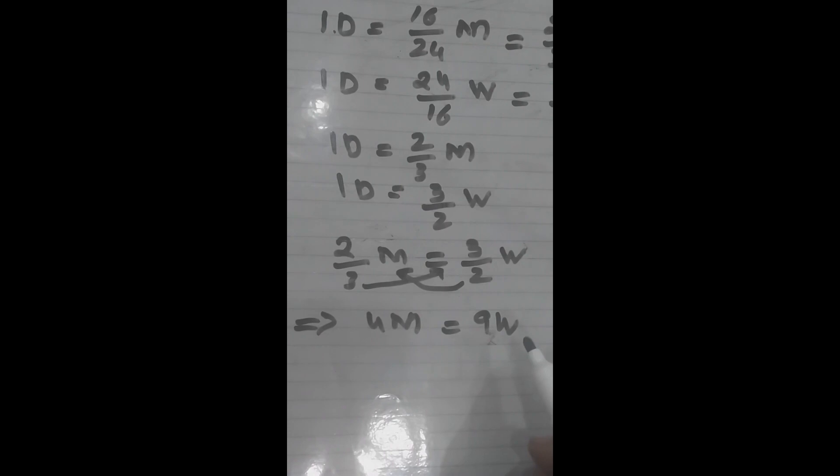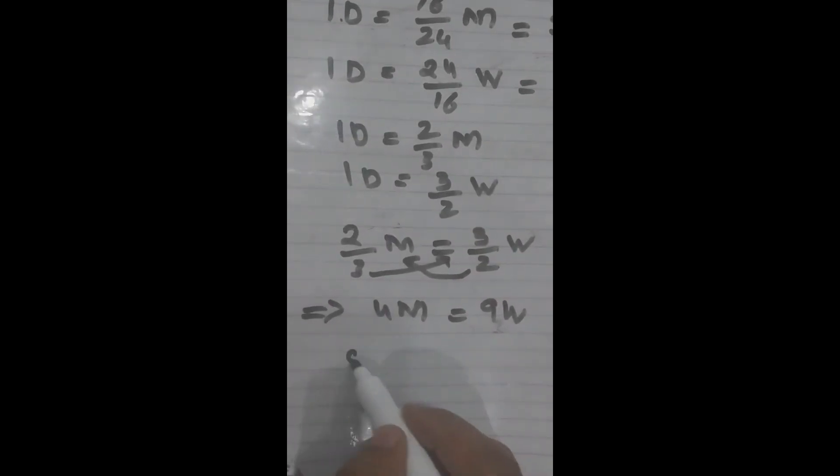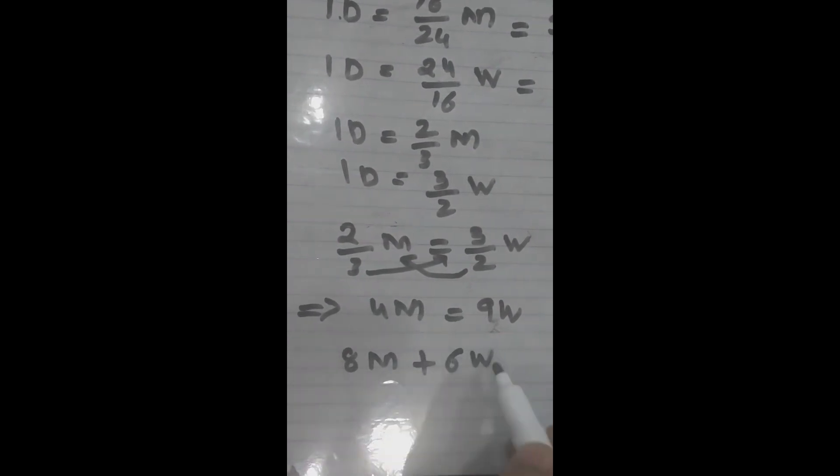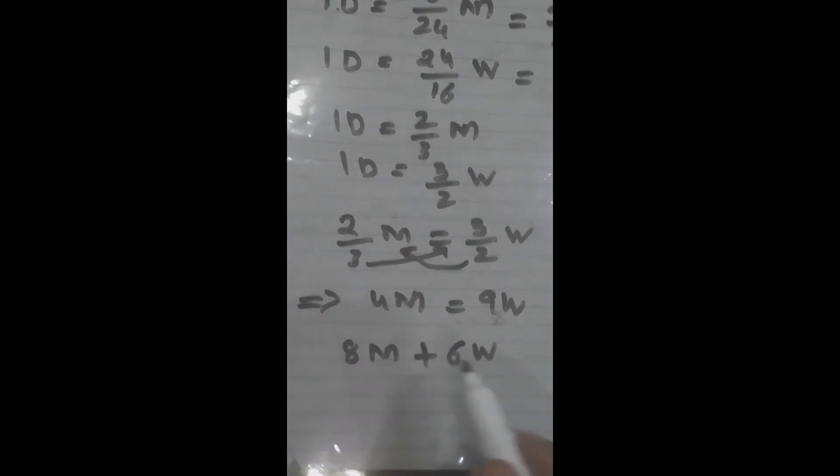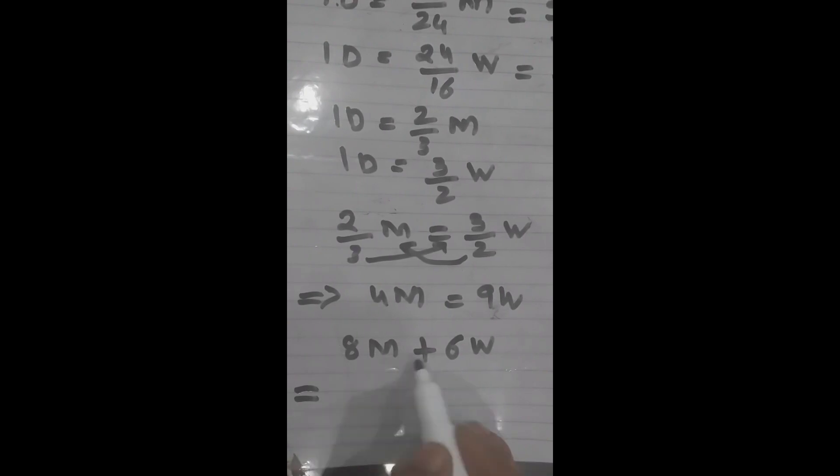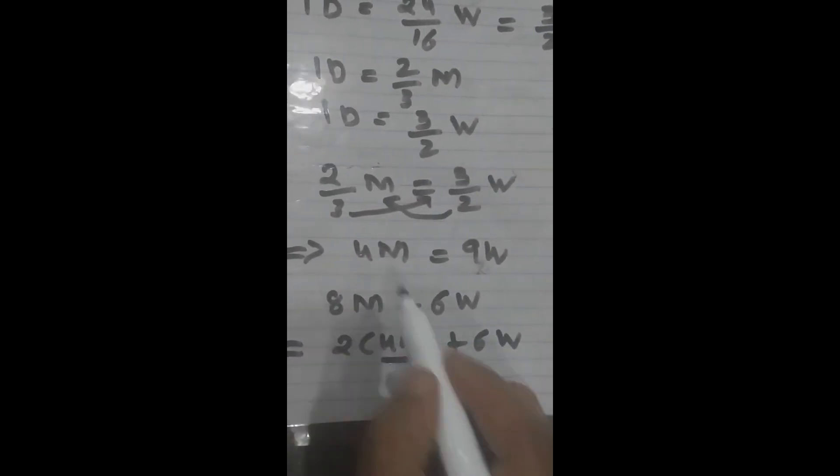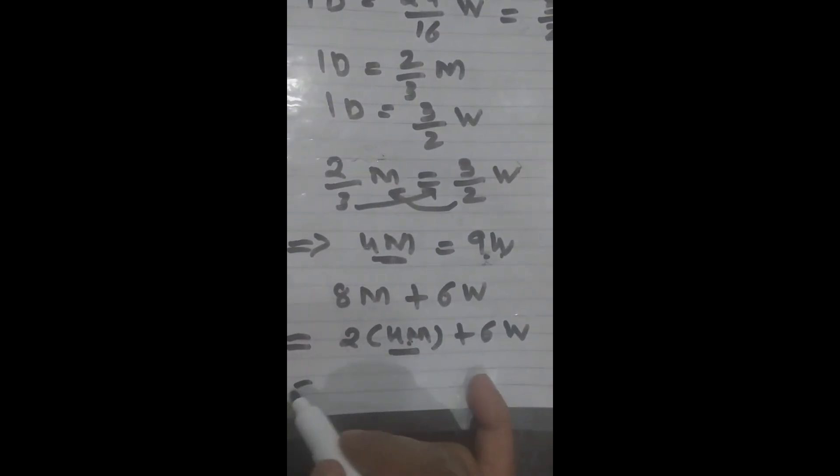Now the question is in how many days 8 men and 6 women can finish the same work. So here first we write this again like this: 2 into 4M plus 6W. Now this 4M is equal to 9W, so we write 9W in the next step.